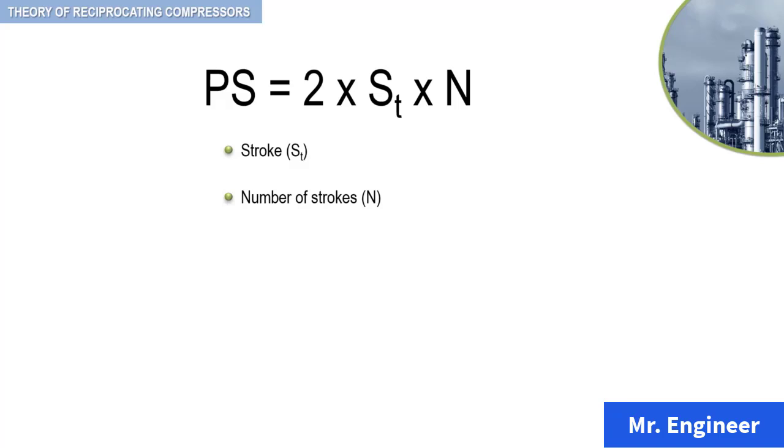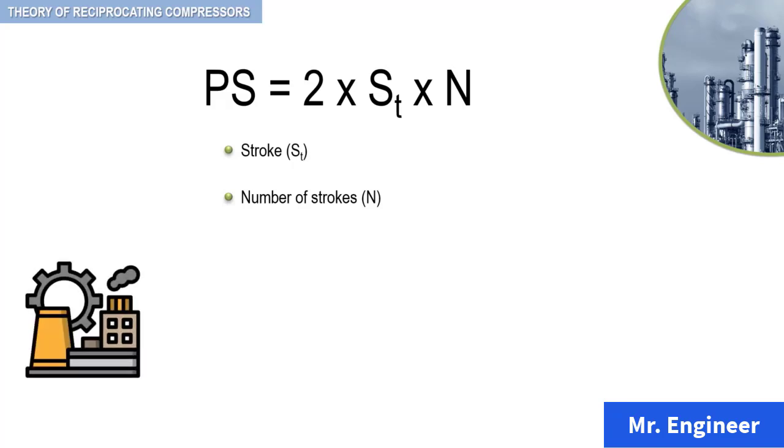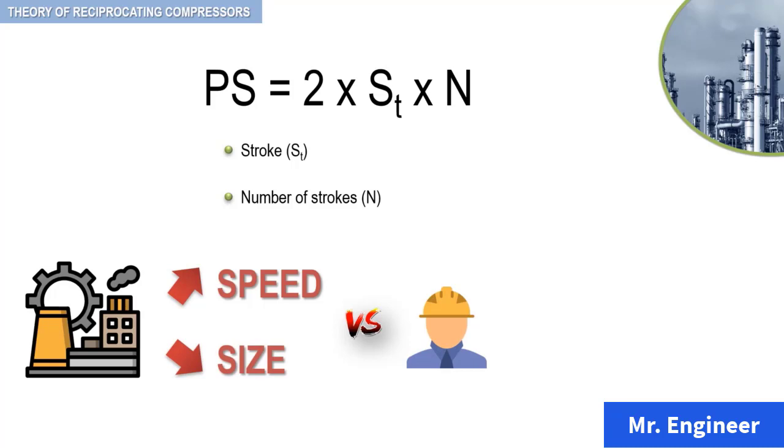The manufacturer is at odds with the user because he would like to keep the speed up to keep the size of the compressor down, while the user would like to keep the speed down for reliability purposes.